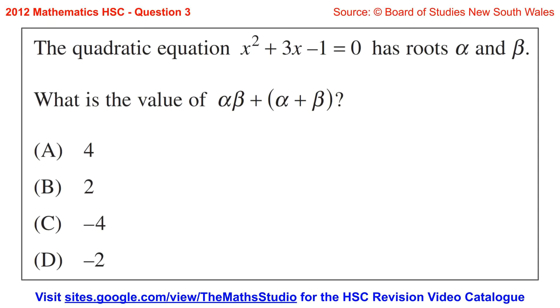Question 3. The quadratic equation x squared plus 3x minus 1 equals 0 has roots alpha and beta. What is the value of alpha beta plus alpha plus beta?